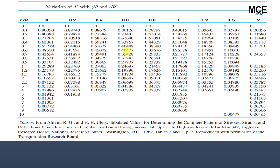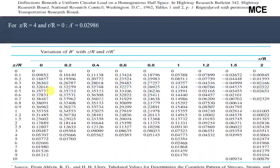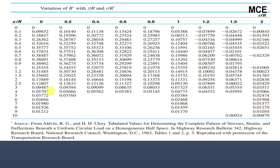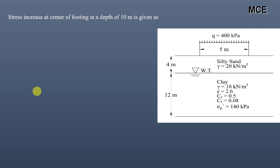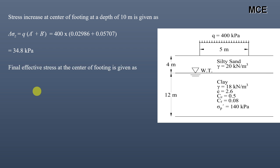For z/R = 4 and r/R = 0, the value of A′ = 0.02986. From the chart for B′, with z/R = 4 and r/R = 0, B′ = 0.05707. The stress increase at the center of the footing at a depth of 10 meters is: Δσ = q × (A′ + B′) = 400 × (0.02986 + 0.05707) = 34.8 kilo Pascal.